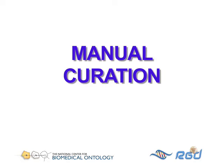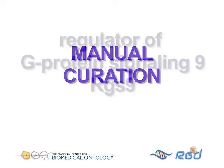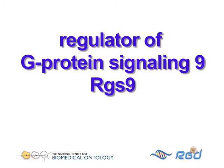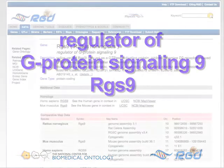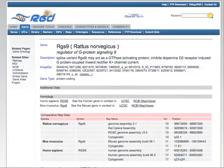The first is through the process of manual curation. Scientific curators read papers, extract the applicable data, and attach that data to gene or protein records through the use of ontology annotations. Let's use the gene Regulator of G Protein Signaling 9, or RGS9, as an example.